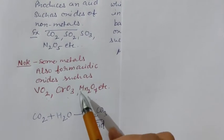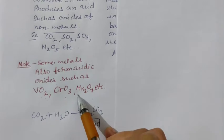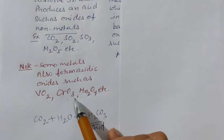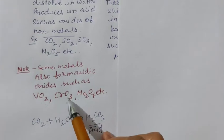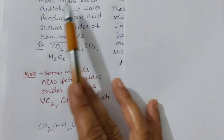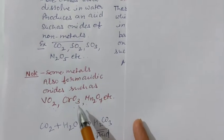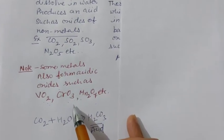There are lots of examples of transition metals which form metallic oxides which are acidic in nature. So acidic oxides are basically non-metals, but some metallic oxides are acidic in nature.